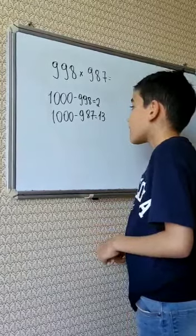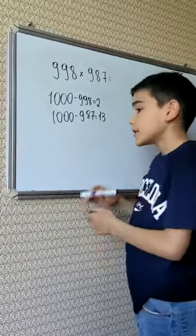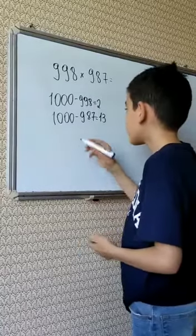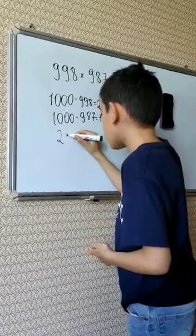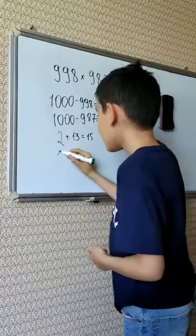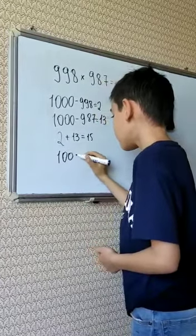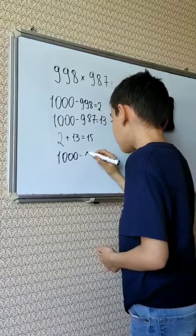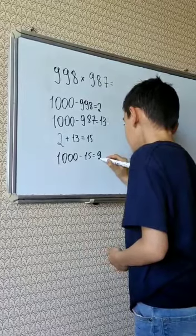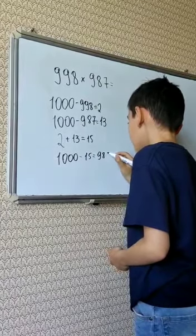That's 13. 2 plus 13 is 15. And 1000 minus 15 is 985.